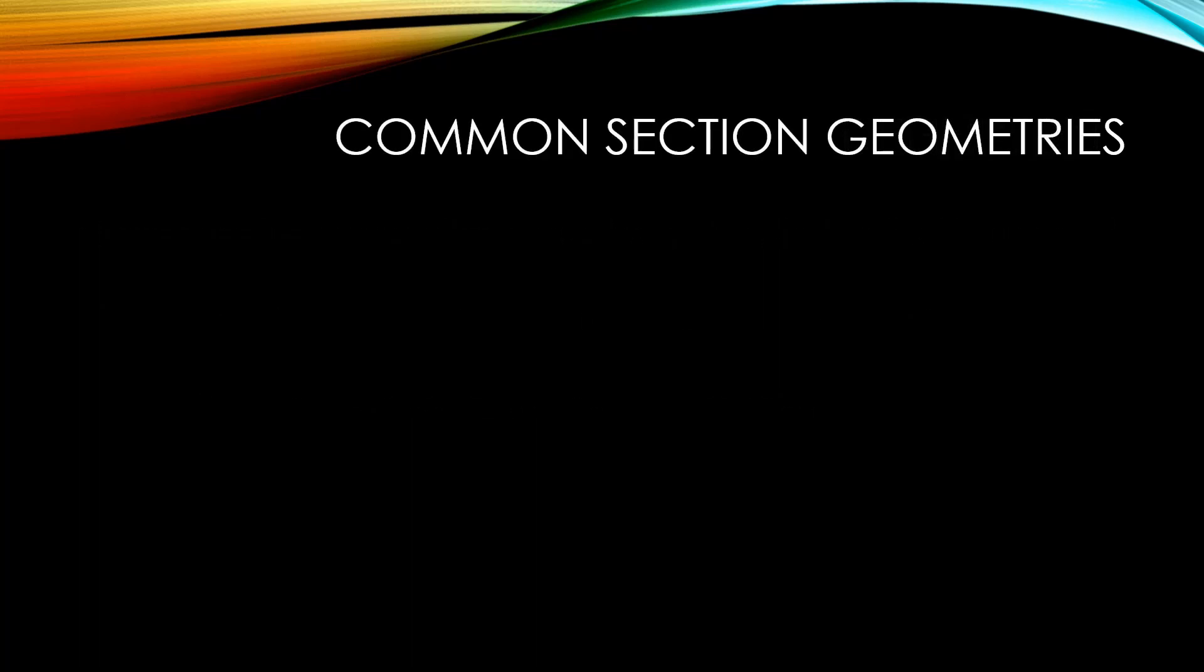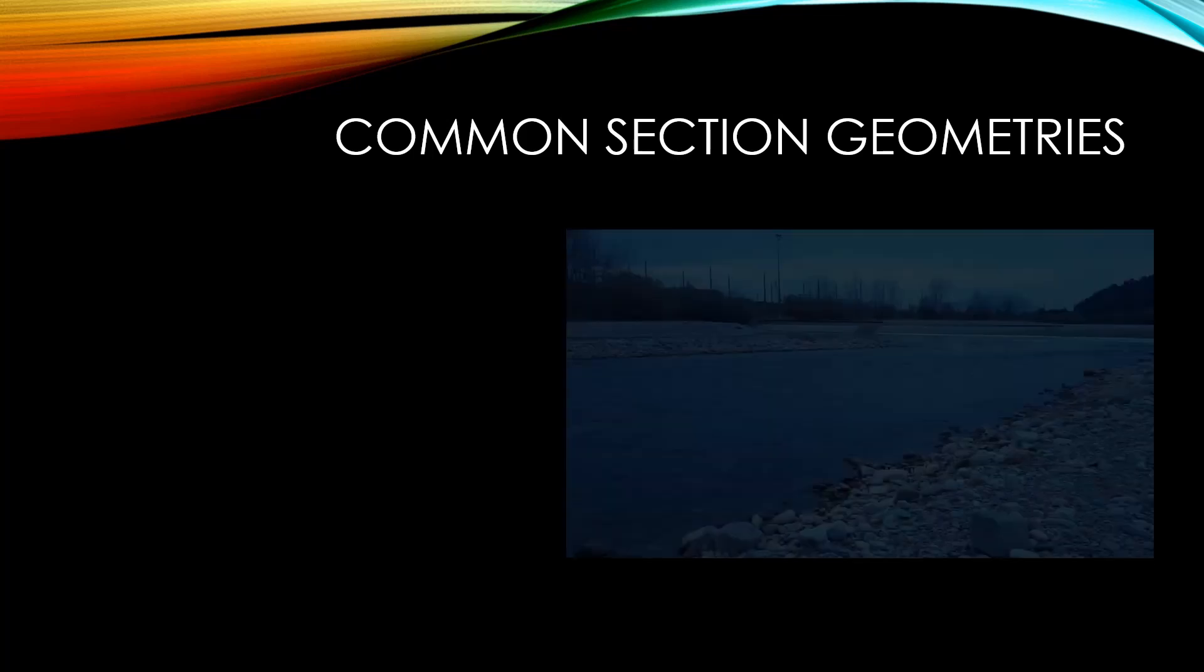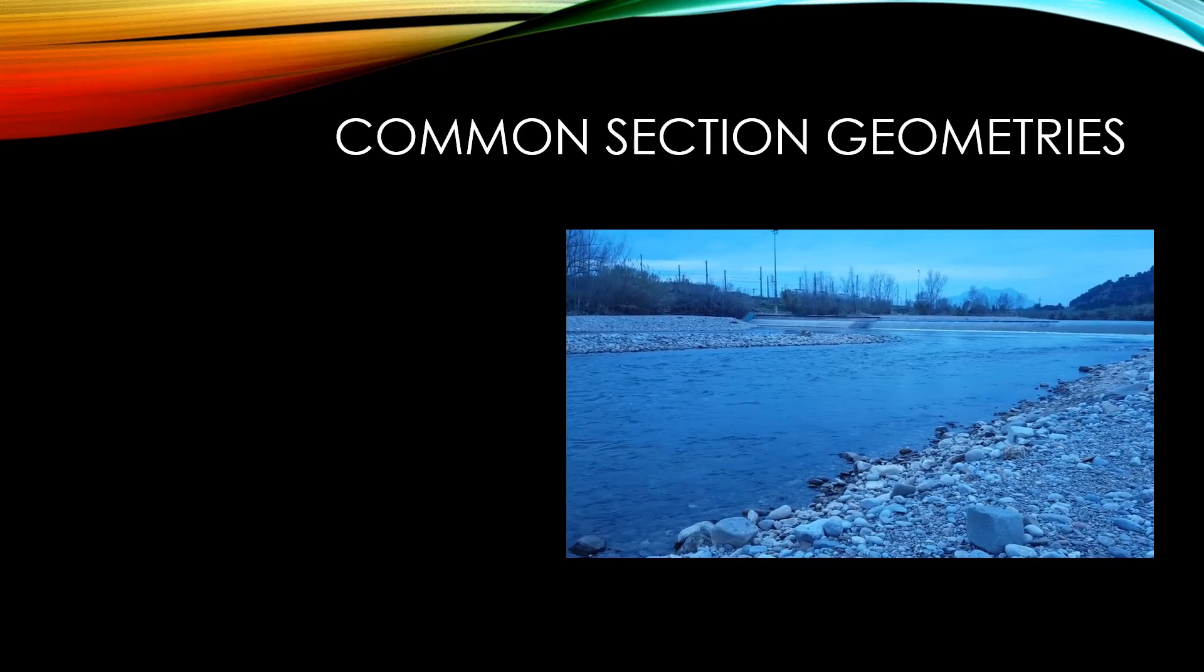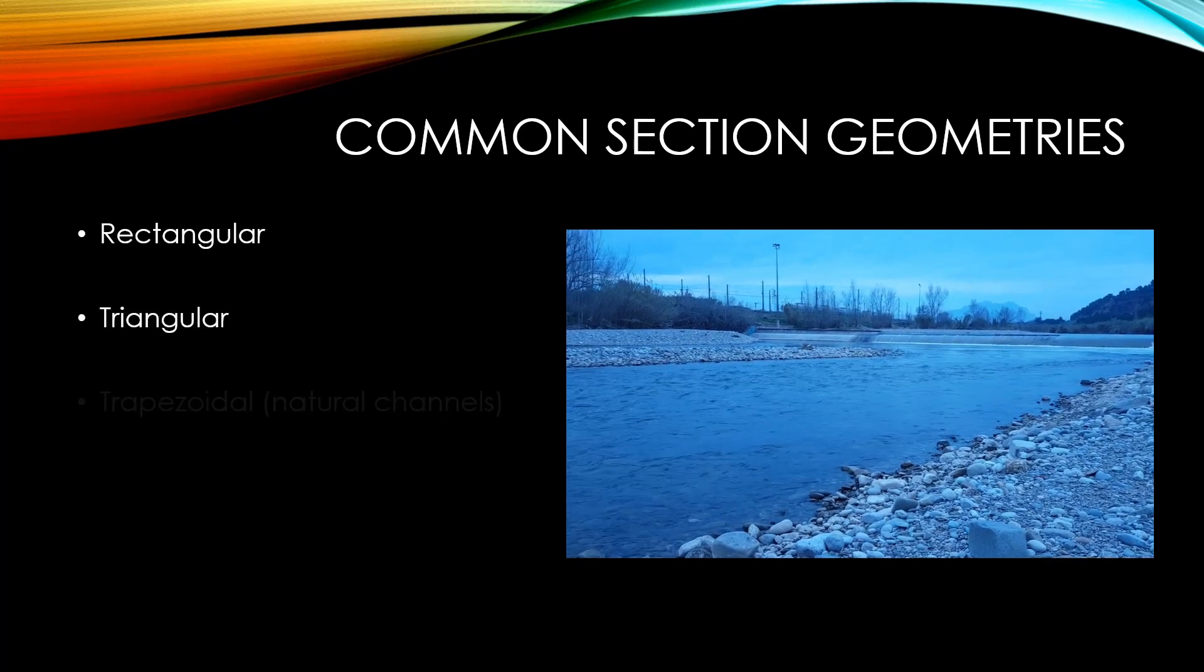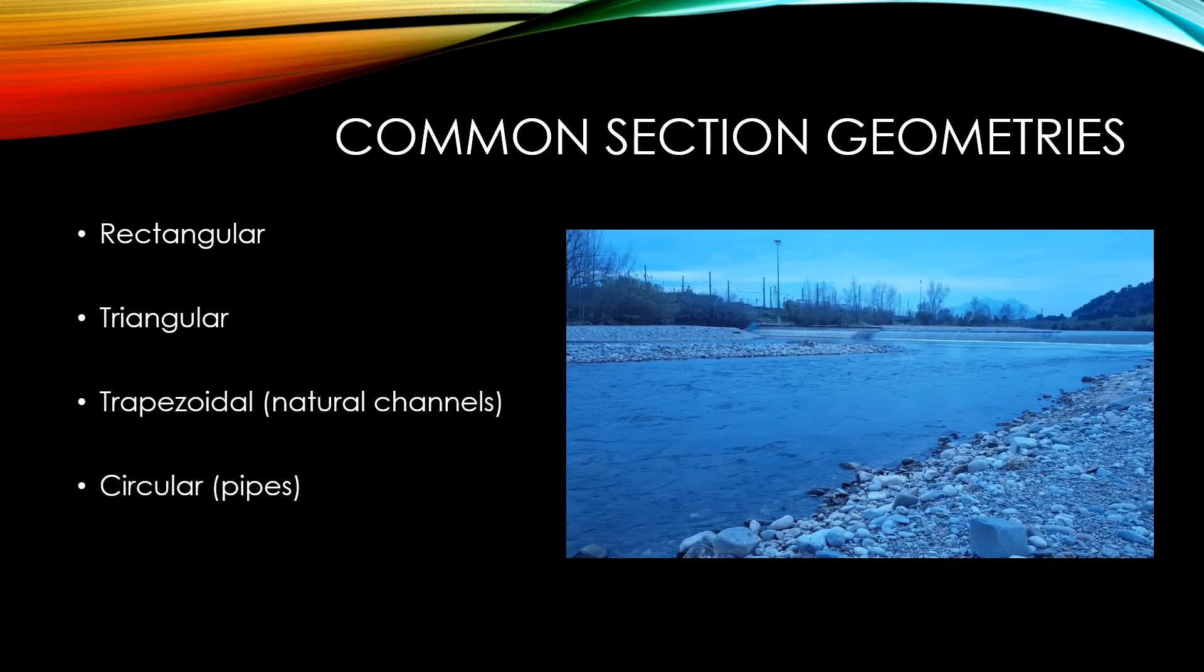Typically, in open channel flow, cross-sections can be simplified into four common geometries. These are rectangular, triangular, trapezoidal, and circular.